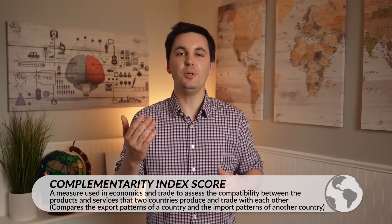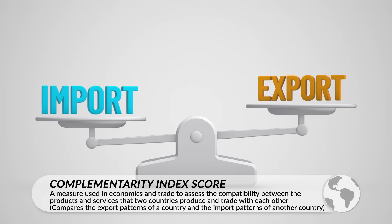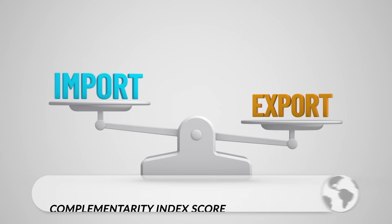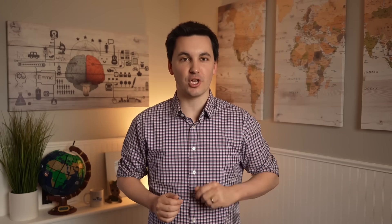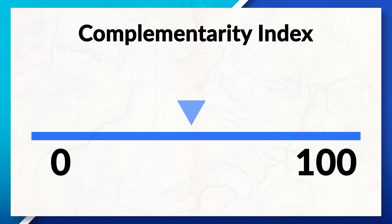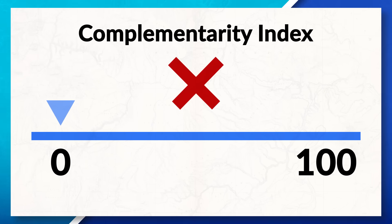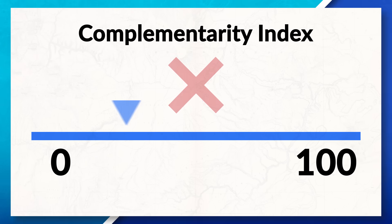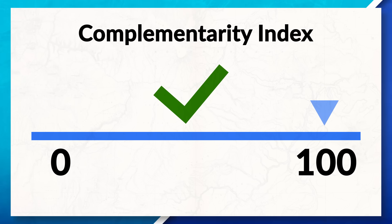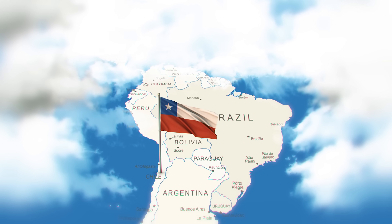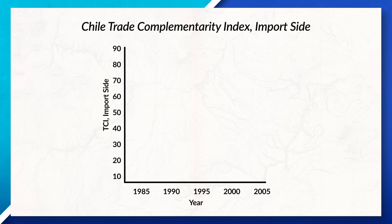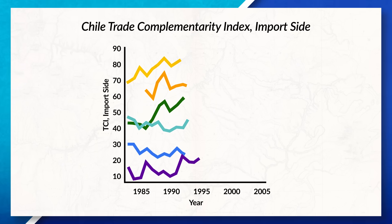When looking at global trade, we can see that countries with a stronger trade complementary index score will be more likely to trade with one another. The complementary index compares the export patterns of one country with the import patterns of another. A higher score indicates a more favorable trade relationship. The index can range from 0 to 100, with 0 meaning the two countries do not complement each other at all, and 100 meaning their exports and imports perfectly match. For example, Chile's imports are more complementary with countries in North America compared to countries in Latin America.